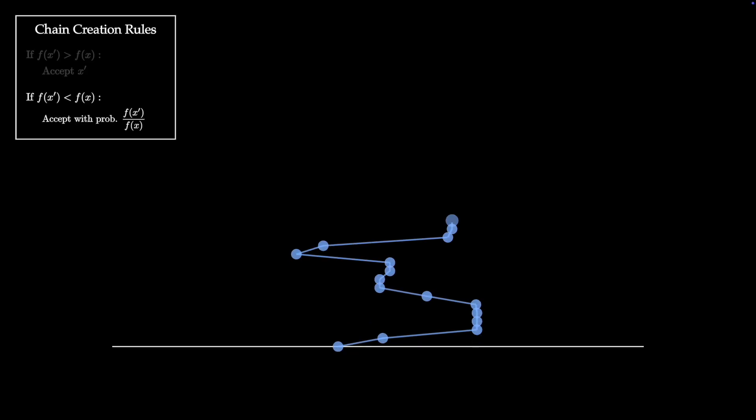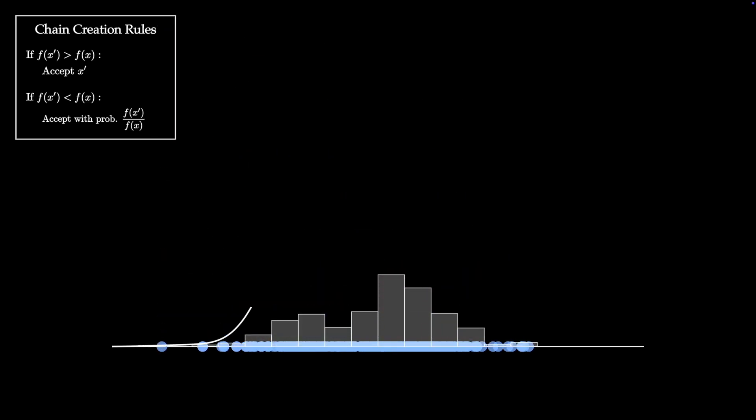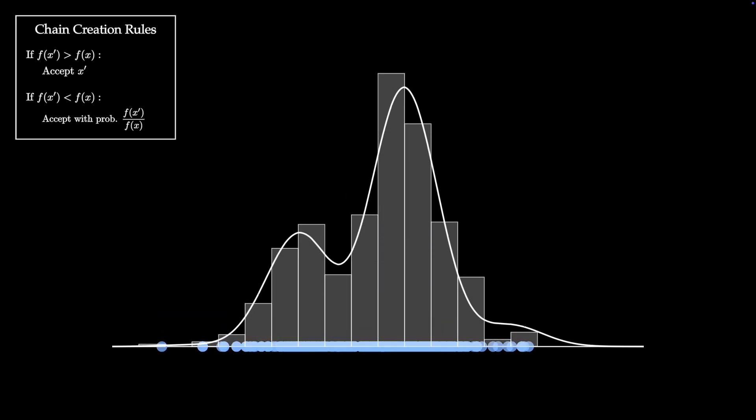We can then continue to build up the chain, always following these two simple rules. Once we have enough samples in the chain, we can collapse it down, and the samples will look as though they were drawn from our target density. I don't know about you, but to me, it's pretty mind-blowing to actually see this work.